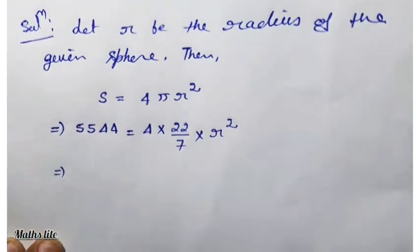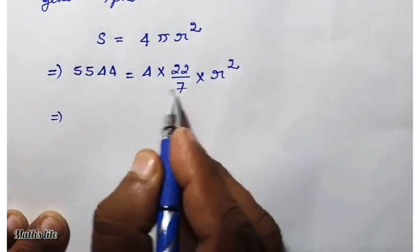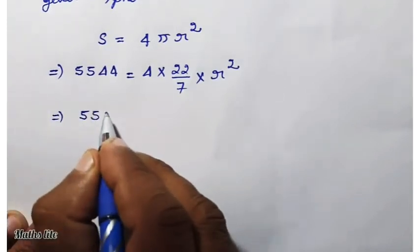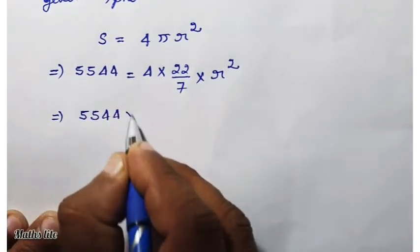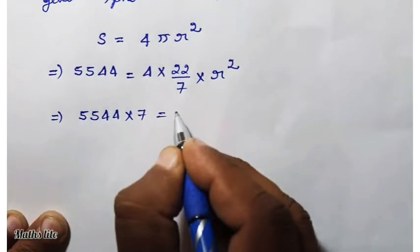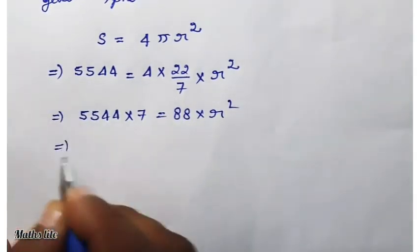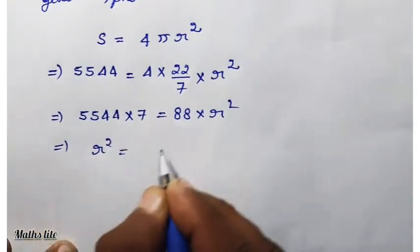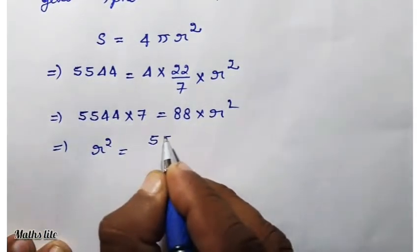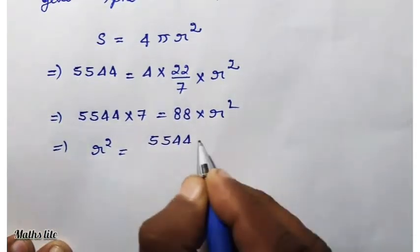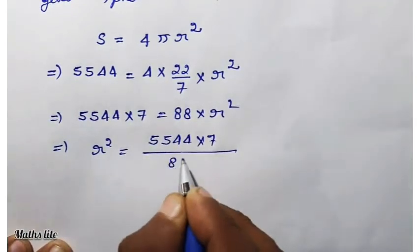Implies that 5544 into 7 equals 88 into R square. Implies that R square equals 5544 into 7 upon 88.